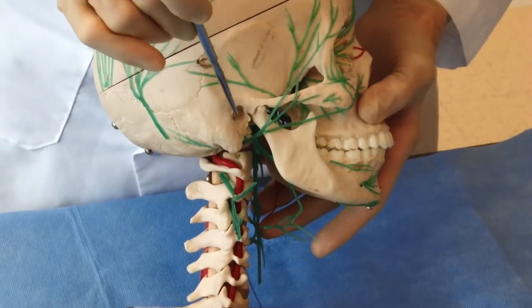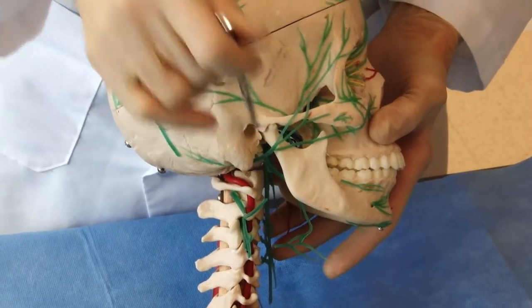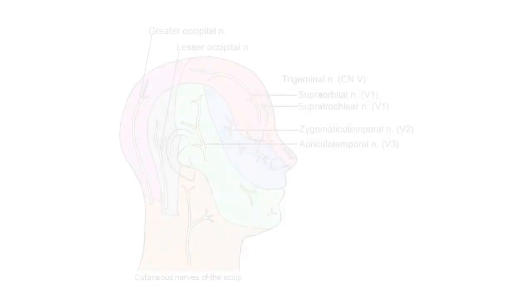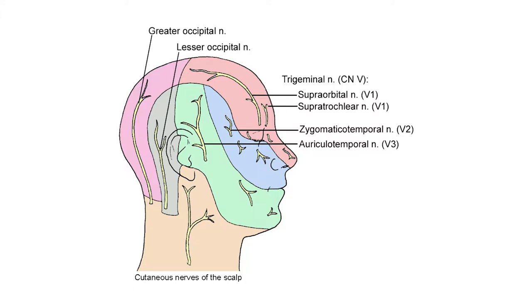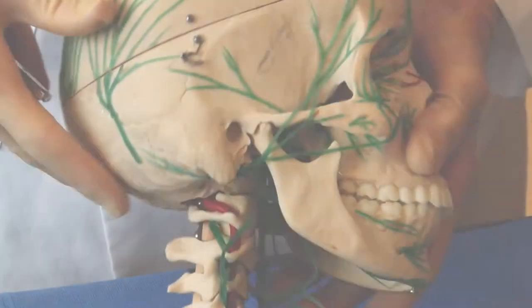The ear, this is the external auditory meatus, the ear is very complicated because embryologically it formed from different regions, and so it's innervated partly by the trigeminal. It also has some innervation from the high cervical nerves. So the ear is not a good thing to test when you're testing sensation from the face.